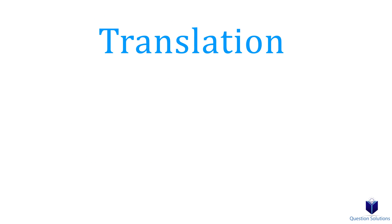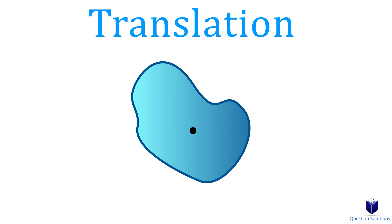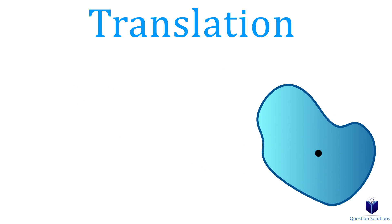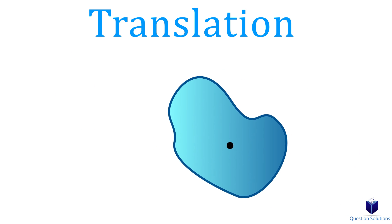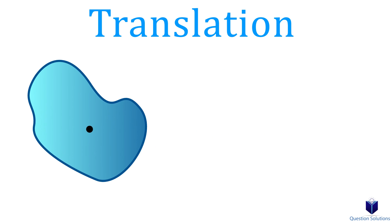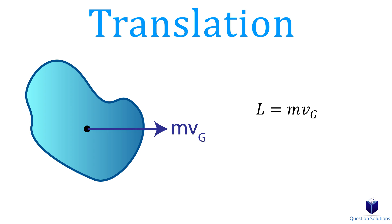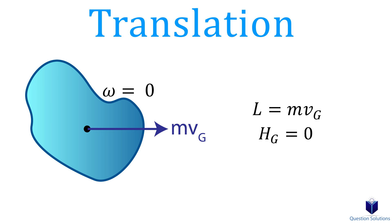When a rigid body is subjected to only translation, meaning it doesn't rotate, the linear momentum can be found by multiplying the mass by the velocity at the center of mass. Since this object is going through translation, there is no angular velocity, which means angular momentum is zero.